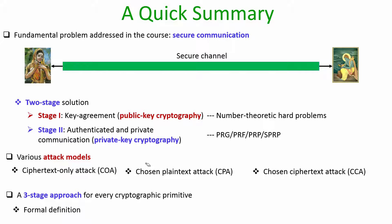For each of the cryptographic primitives used in stage one and stage two, we followed a rigorous three-stage approach. In stage one, we formally defined what exactly we want to construct and what the definition of security is for that primitive. In stage two, we gave an algorithmic construction for that primitive. In stage three, we gave a rigorous formal security proof showing that the algorithmic construction satisfies the formal definition given in stage one.